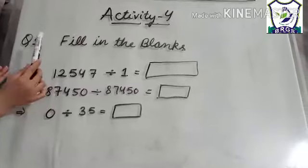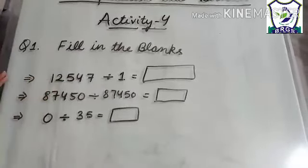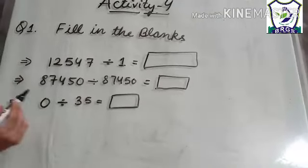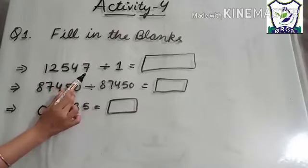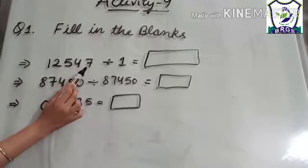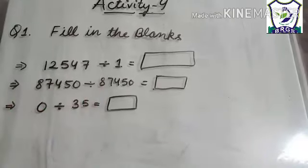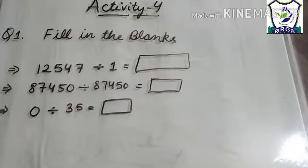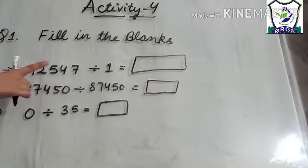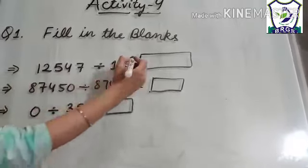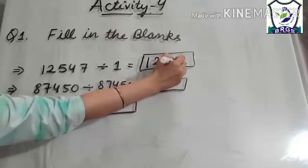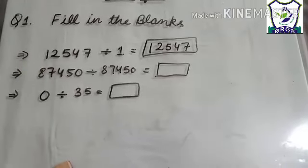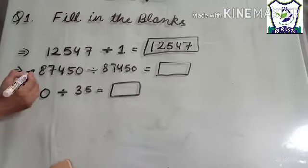Activity 4, question number 1 is fill in the blanks. As an example, you are given the number 12,547, and when you divide this number by 1, what answer will you get? We have gone through the first property of division: whenever a number is divided by 1, the quotient is the number itself. So the quotient will be 12,547. Whenever a number is divided by 1, the quotient is the number itself. This is your first property of division.